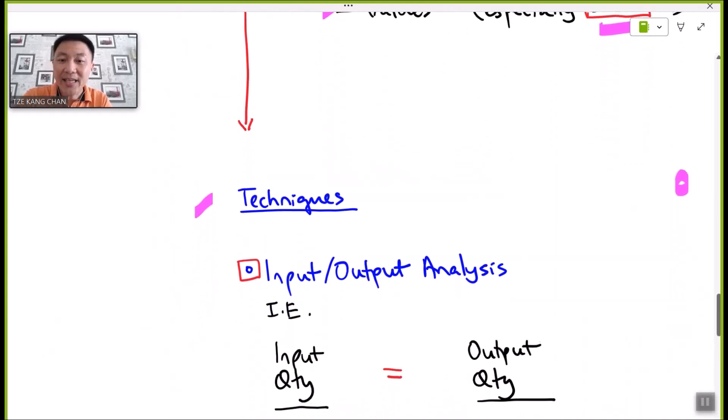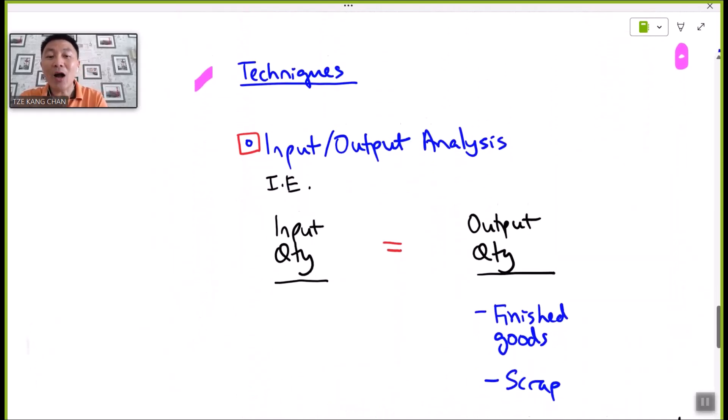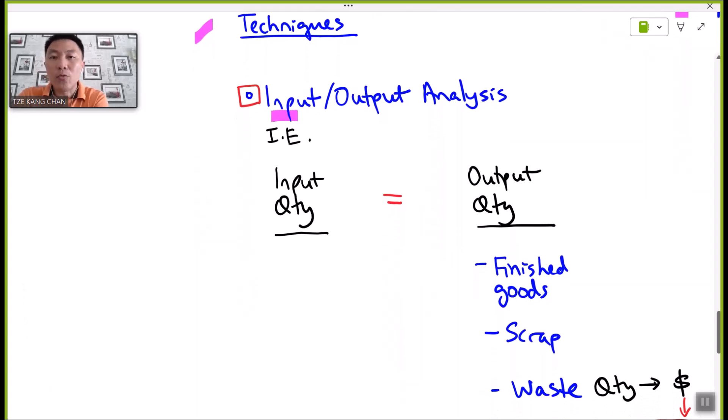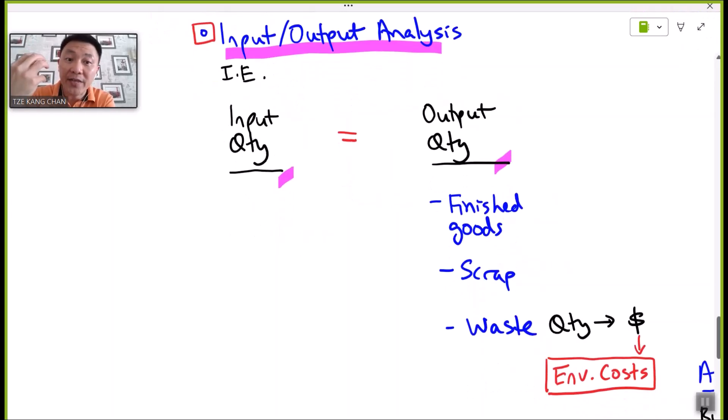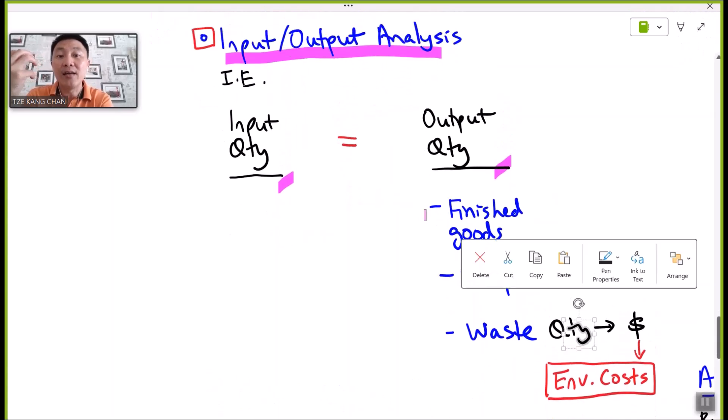Firstly, input-output analysis. The rationale of such analysis is to believe in what goes in must come out. The quantity of input, including all sorts of material inputs, would be equal to the summation of the quantity of different types of output, such as finished goods, scrap, as well as waste.